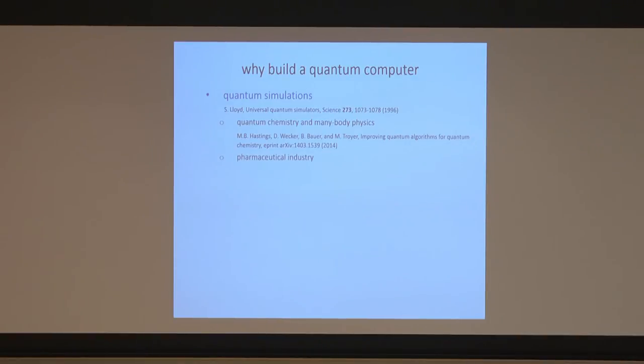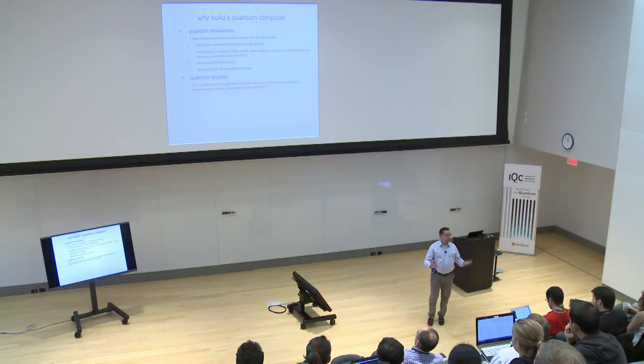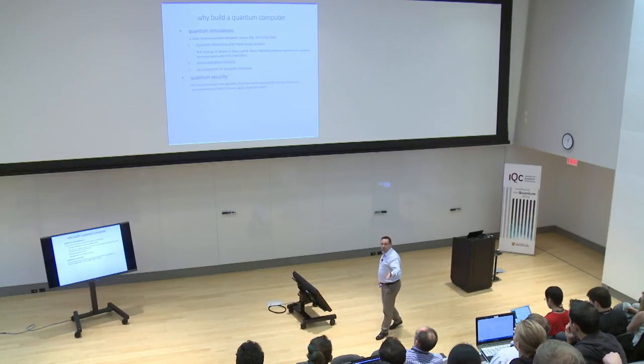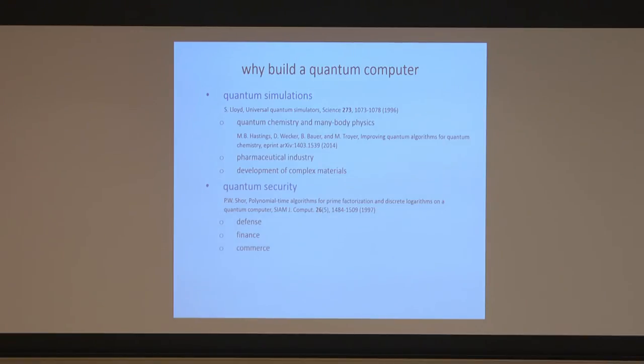Quantum chemistry can eventually be extended to simulate protein folding, which is a key process in the pharmaceutical industry. While that is a far-fetched area and we are very far from there, it gives an idea that making a quantum computer can actually be useful. Of course, everybody knows a quantum computer can be used for quantum security — the well-known 1997 paper by Peter Shor shows a quantum computer would be very efficient at factorizing very large numbers. Factorizing a 2,000-bit number with a classical computer would take several times the age of the universe.